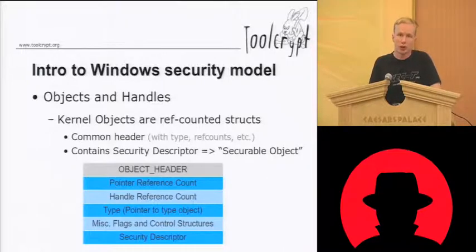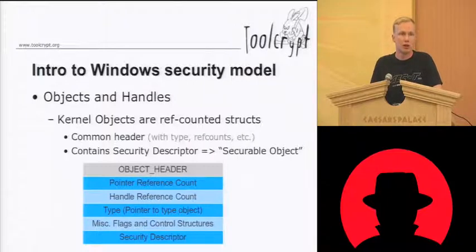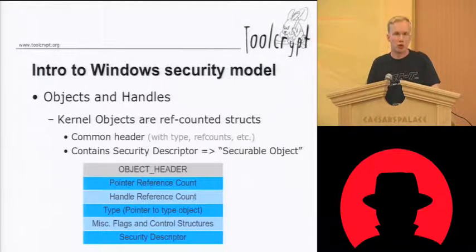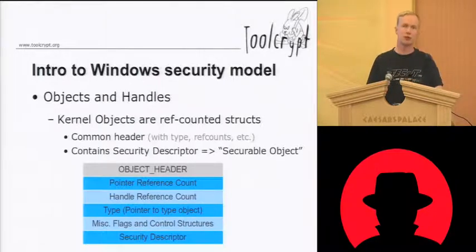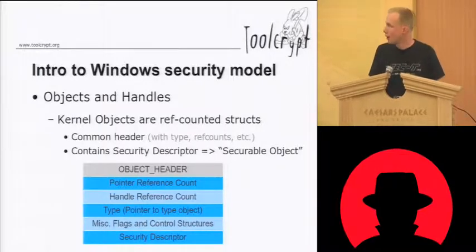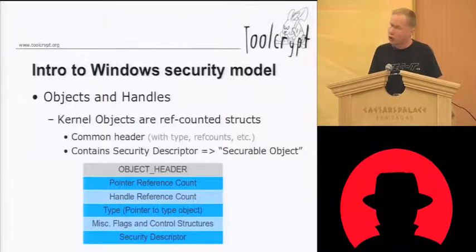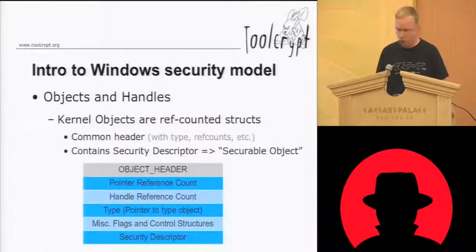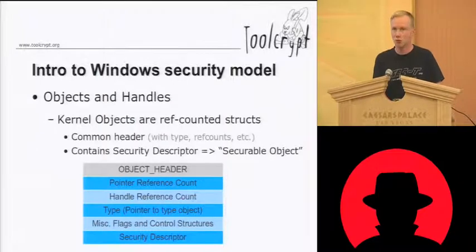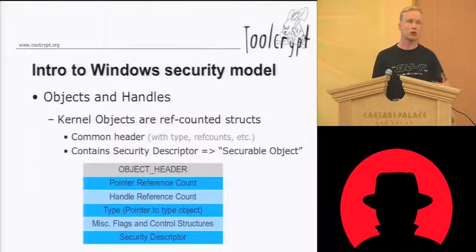Resources in Windows, most of the time, are represented by objects — so-called objects in the kernel. This has nothing to do with object-oriented programming or anything like that, they're just called objects. These live in the kernel, so they're not accessible to user land applications, because they could be manipulated. Most kernel objects contain a security descriptor that controls the access to the actual system resource represented by that object.